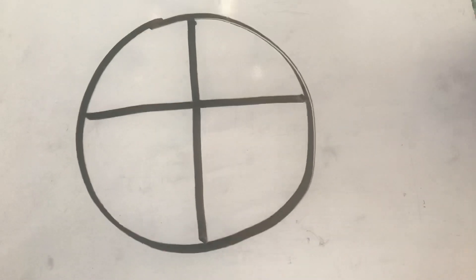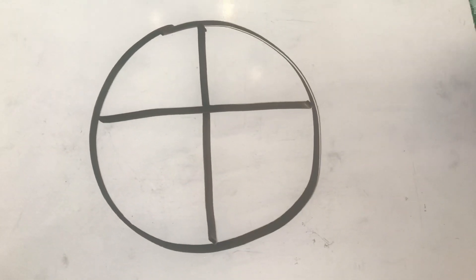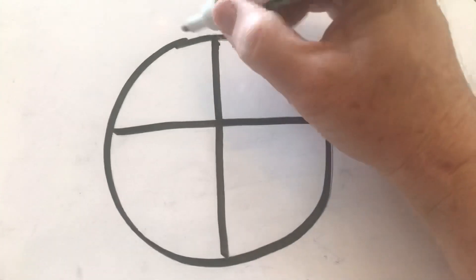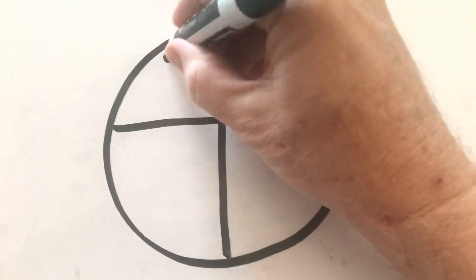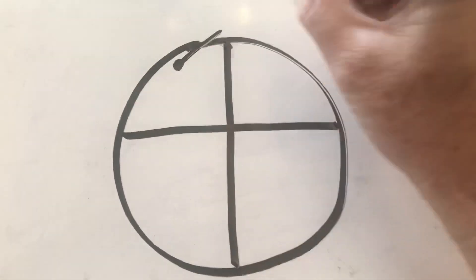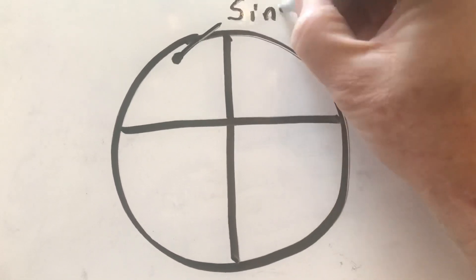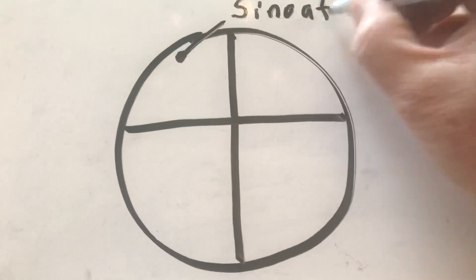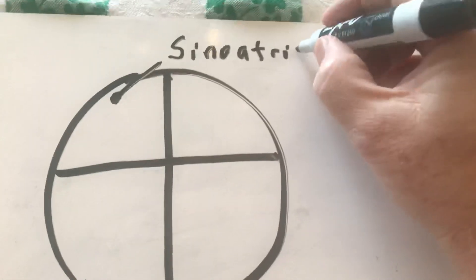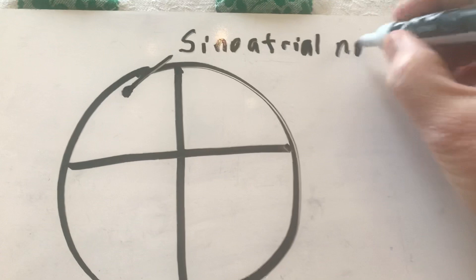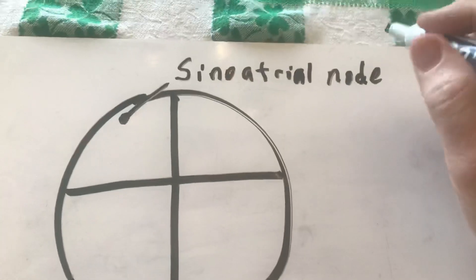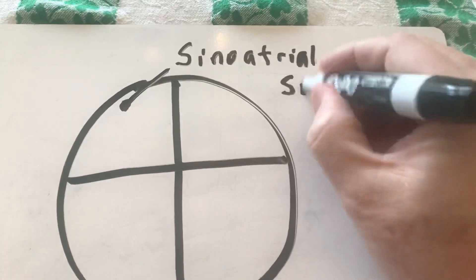And as you know that's the heart and you know the parts of the heart. So the first thing that happens is up here in the right hand corner you have something called the sinoatrial node.